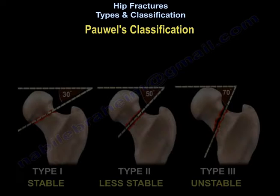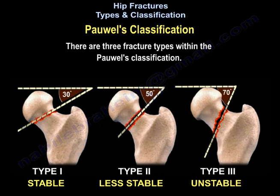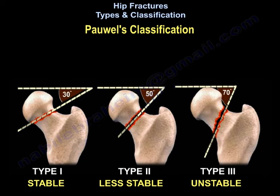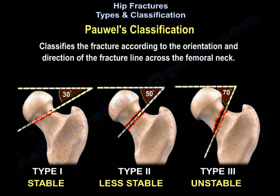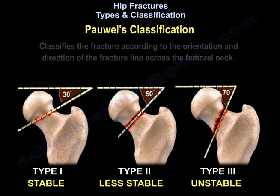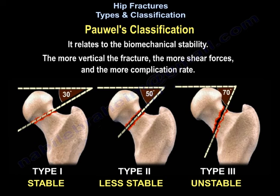The Pauwels classification has three fracture types. It classifies the fracture according to the orientation and direction of the fracture line across the femoral neck. It relates to biomechanical stability — the more vertical the fracture, the more shear forces and the higher the complication rate.